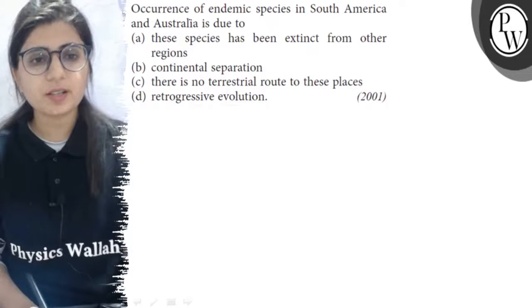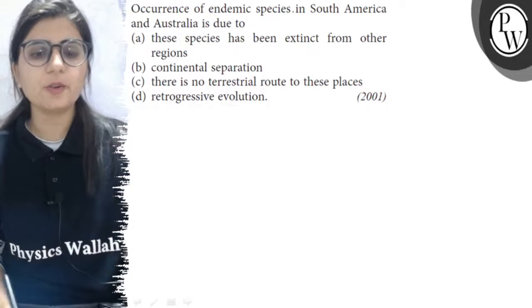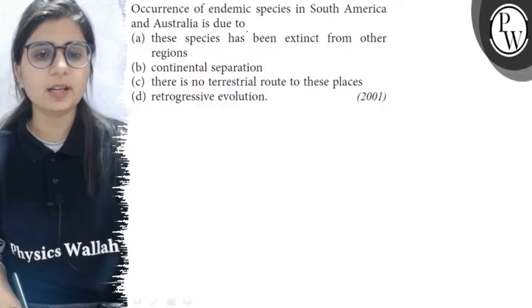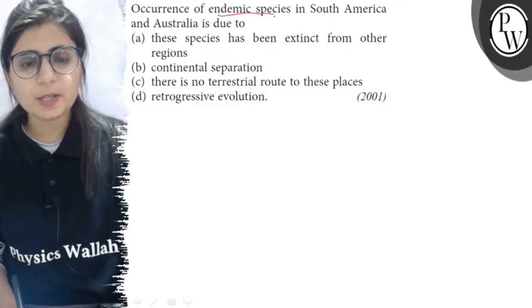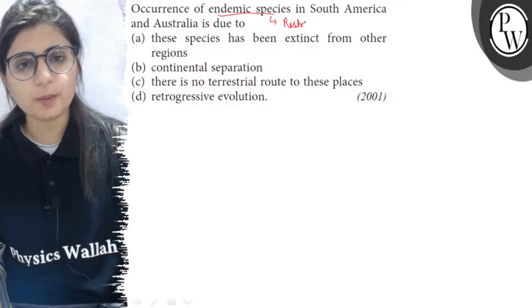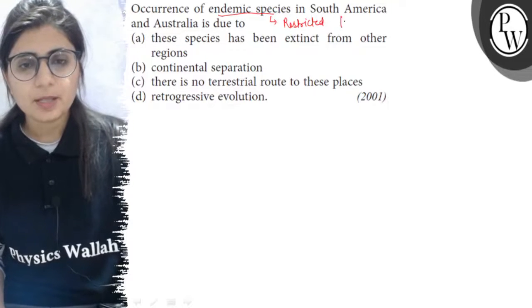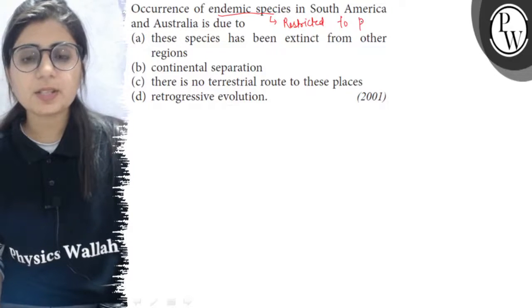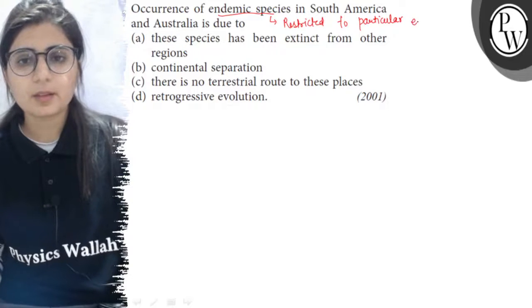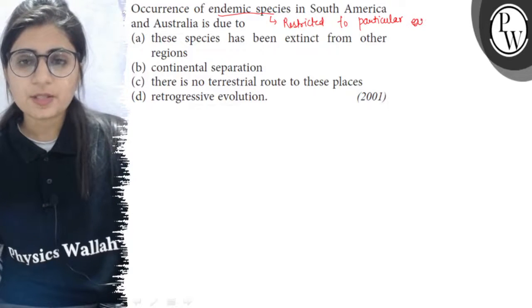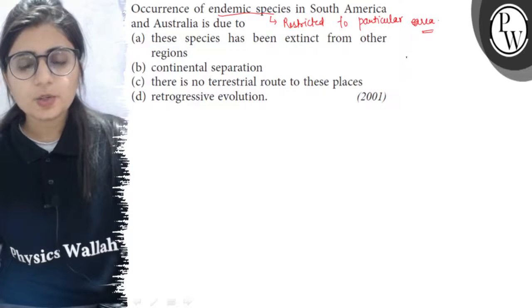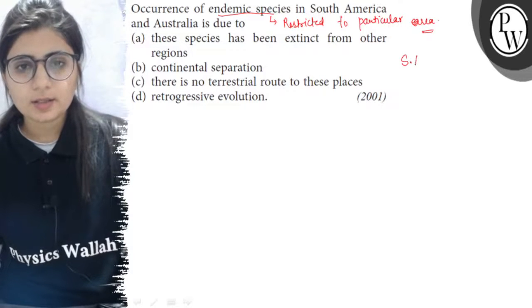Hello Bacho, the question is: occurrence of endemic species in South America and Australia is due to what? Endemic species are the species which are restricted to a particular area — they are found in that particular area and nowhere else. Such species are called endemic to that area.